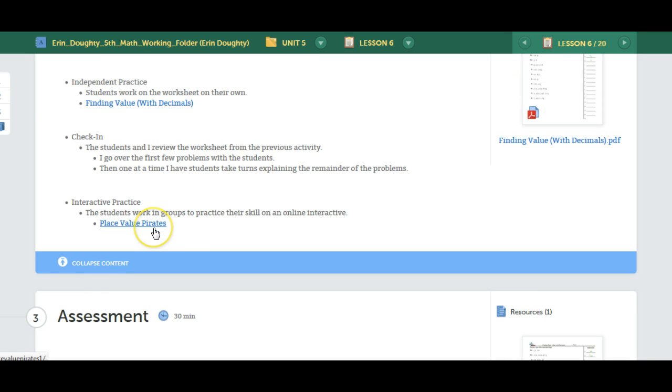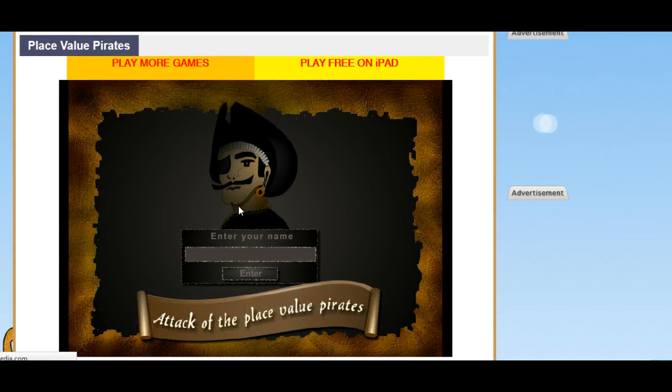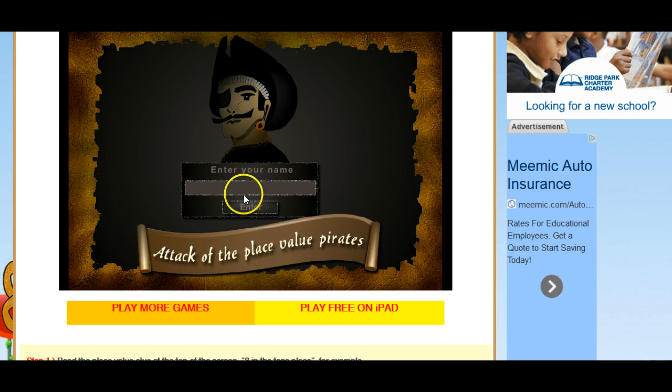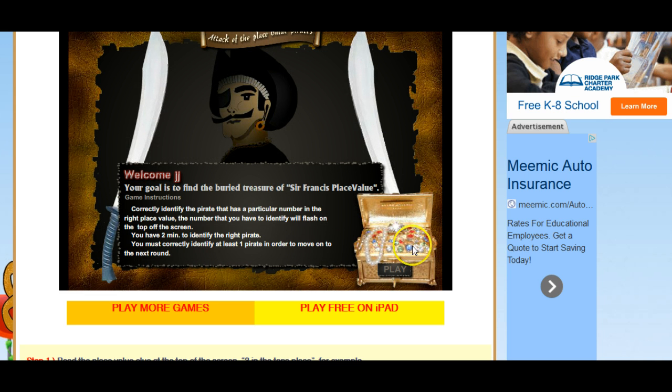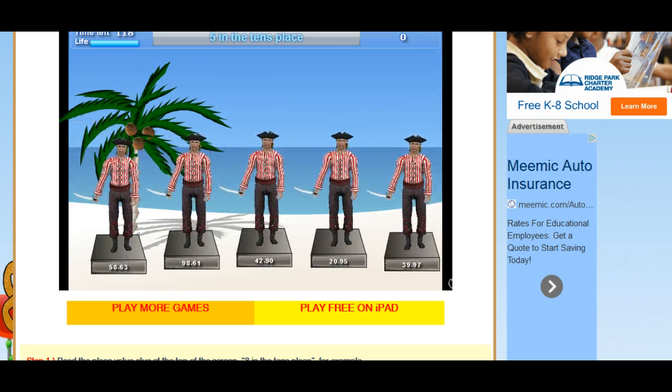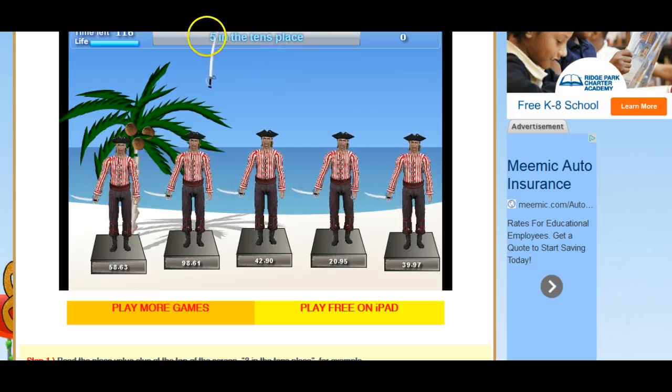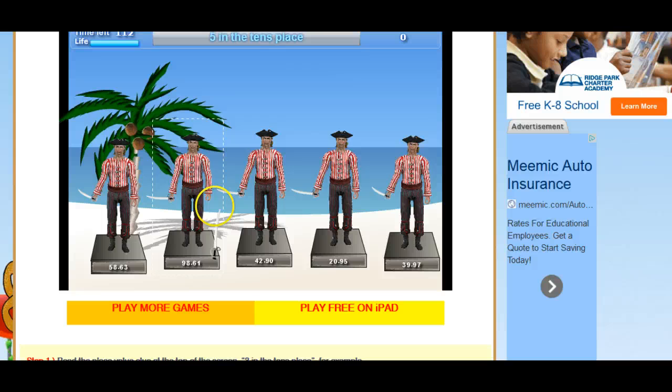And finally, with the interactive practice, I found a great interactive which is place value pirates. And the students play this game. Just enter in the name here real quick, and they have to try and find the treasure. So it gives them a five in the tenths place, and the students have to choose which one has a five in the tenths place.